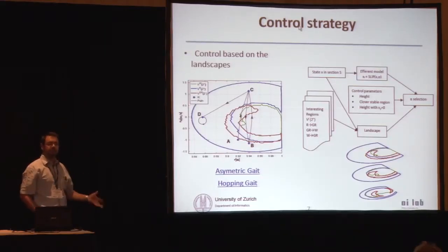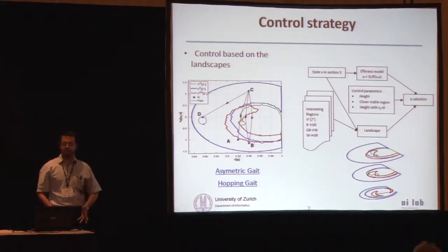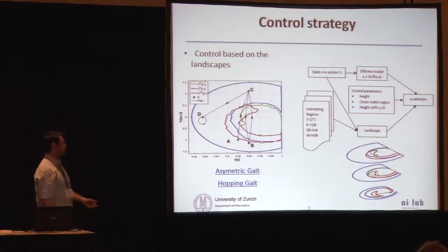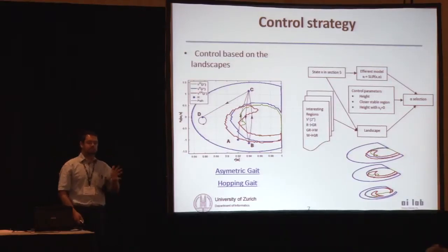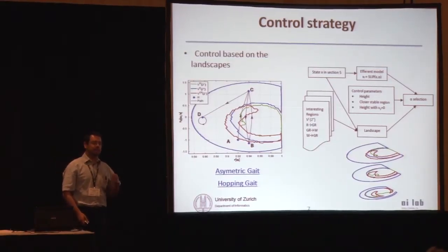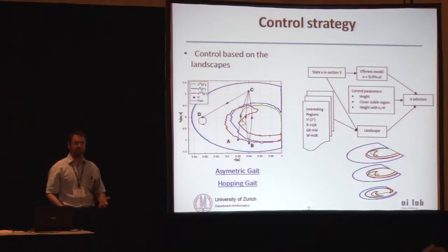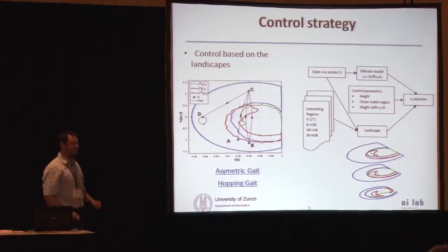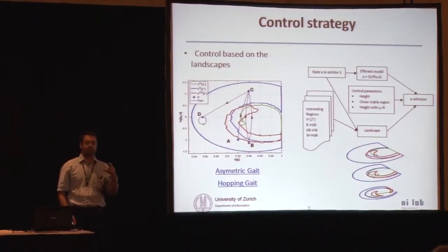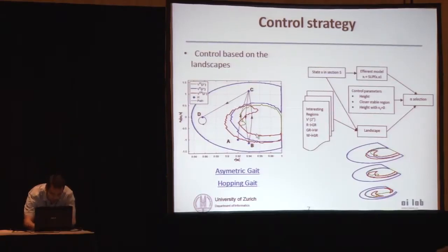So if you take this into account, if you have this kind of system or the robot behaves like that, you can create these kind of landscapes. Landscapes where you know that the system is able to run, landscapes where the system is able to walk. And then just based on the initial condition in the S section, you can decide what do you want to do with the system. For example, here, basically I'm making the system to go to, I'm forcing the system to keep the same compression, producing an asymmetric gait.